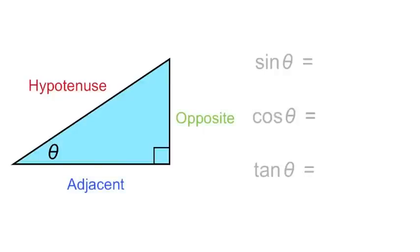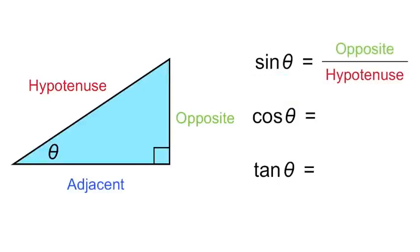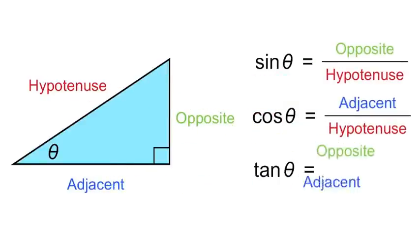Recall the definitions for sine, cosine, and tangent. Sine is opposite over hypotenuse, cosine is adjacent over hypotenuse, and tangent is opposite over adjacent.